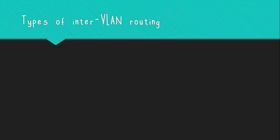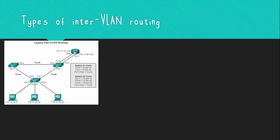The three main types of InterVLAN routing are legacy InterVLAN routing, which is similar to how routers used to connect different physical LANs using different interfaces. Routers usually perform InterVLAN routing by having two different switch ports connected to two different router interfaces.